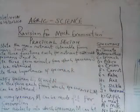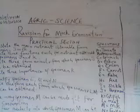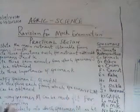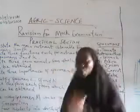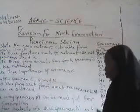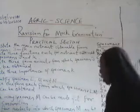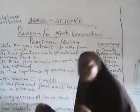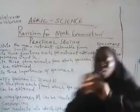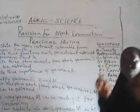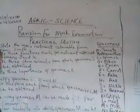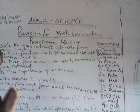The next question asks: state one way specimen M — milk — can be made fit for human consumption. I was surprised that majority of you could not identify this. From class, they have always been telling you that milk goes through pasteurization so that you kill all the germs and pathogens inside the milk from the farm animal. So the best way to make milk fit for human consumption is to put it through the pasteurization process.